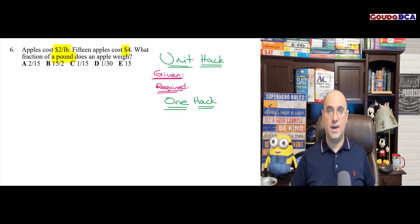So here, what is the unit that is given? Apples cost $2 per pound. So that's a unit. So unit number one, dollars per pound. What else is given? 15 apples cost $4. So the second unit I have is dollars.